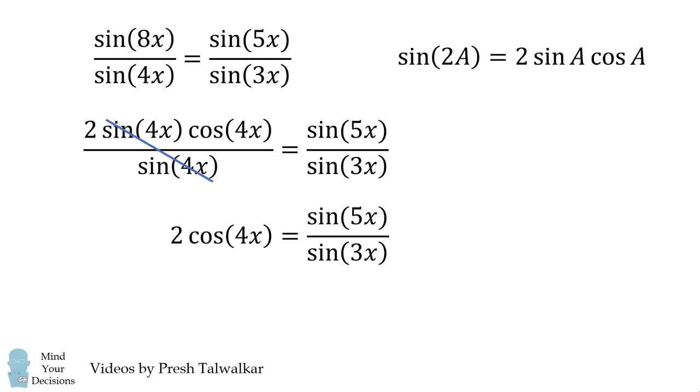From here, we'll simplify this equation, and we get 2 multiplied by sine of 3X multiplied by cosine of 4X is equal to sine of 5X.